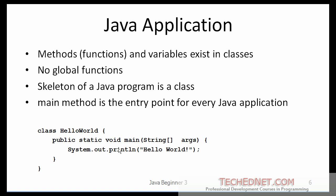Like most programming languages, a line of code cannot exist by itself — it must go inside a function. In Java, that function is 'main,' which provides the entry point for every Java application. The main function must be declared as public, static, void, named 'main,' and can optionally accept command-line arguments. Additionally, since Java is completely object-oriented, a function cannot be written by itself — it must go inside a class. So we define a class called HelloWorld with the main function placed inside it.